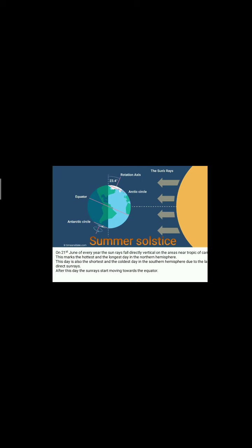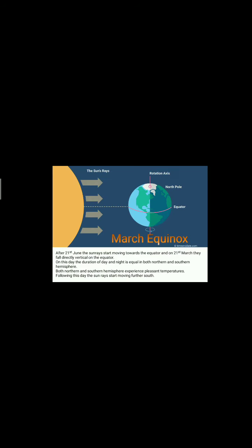After 21st June, as the sun keeps rotating and revolving, other parts of the earth will face the sun's rays. So after 21st June, the sun's rays move from the Tropic of Cancer towards the equator. As you can see in the picture, the sun's rays are now falling on the equator. After 21st June, when the sun rays start moving towards the equator, on 21st March the sun's rays are exactly vertical on the equator.